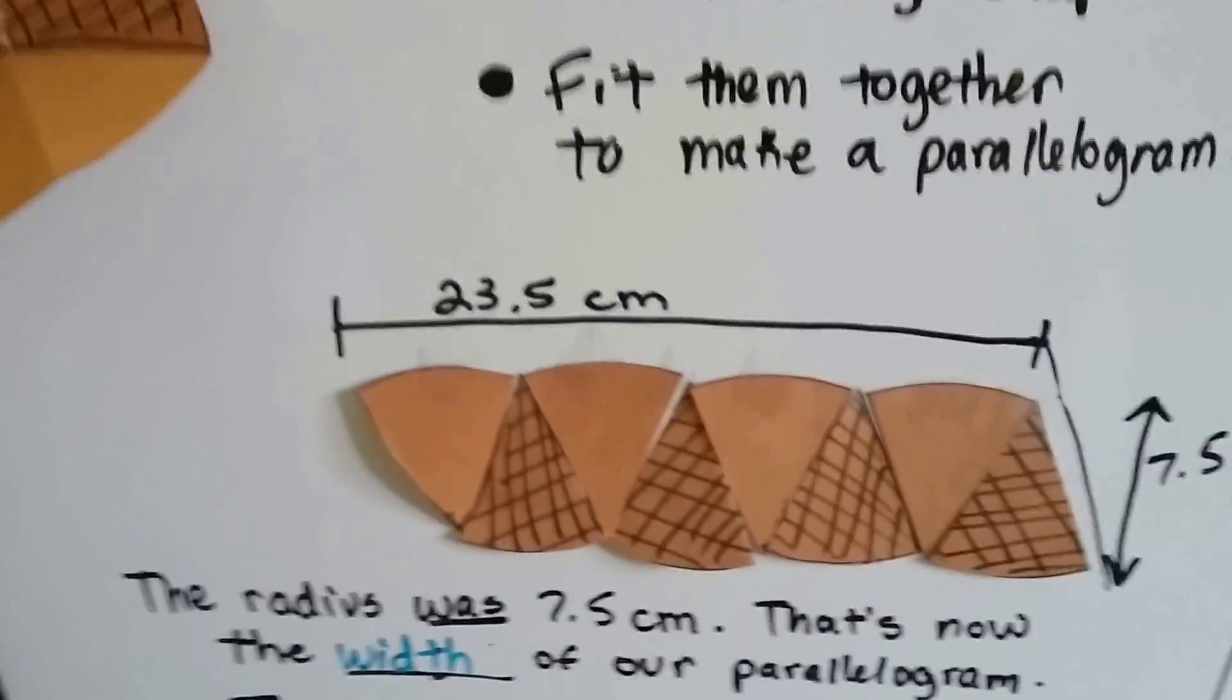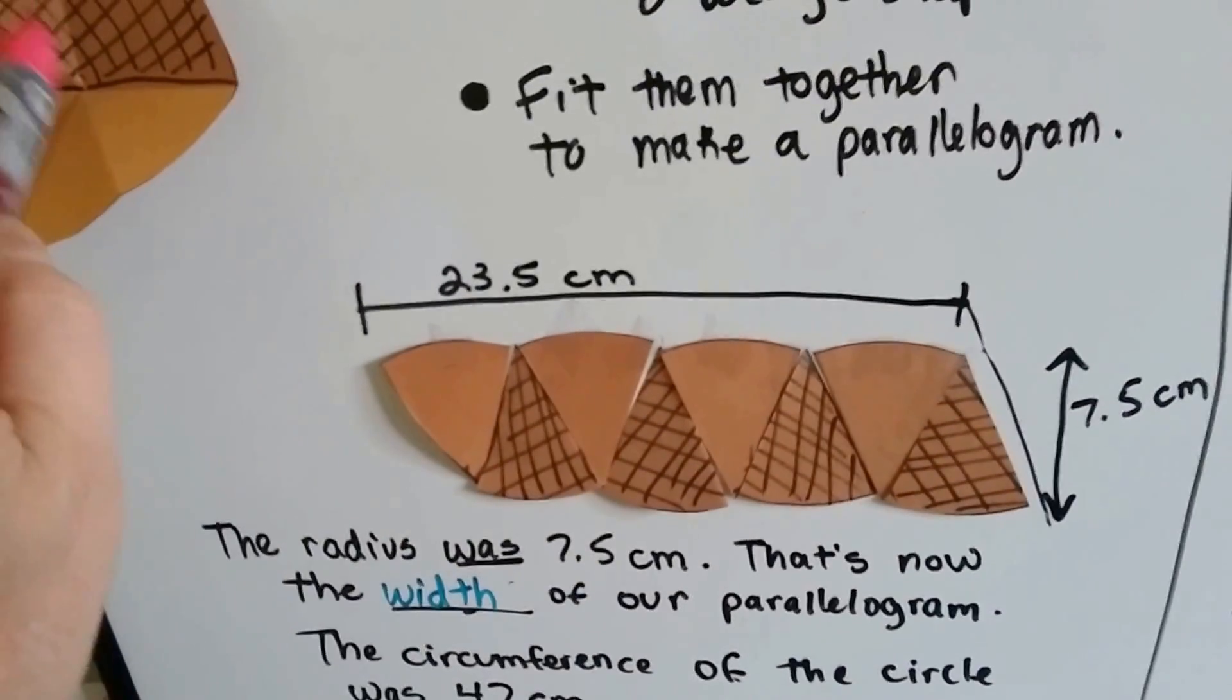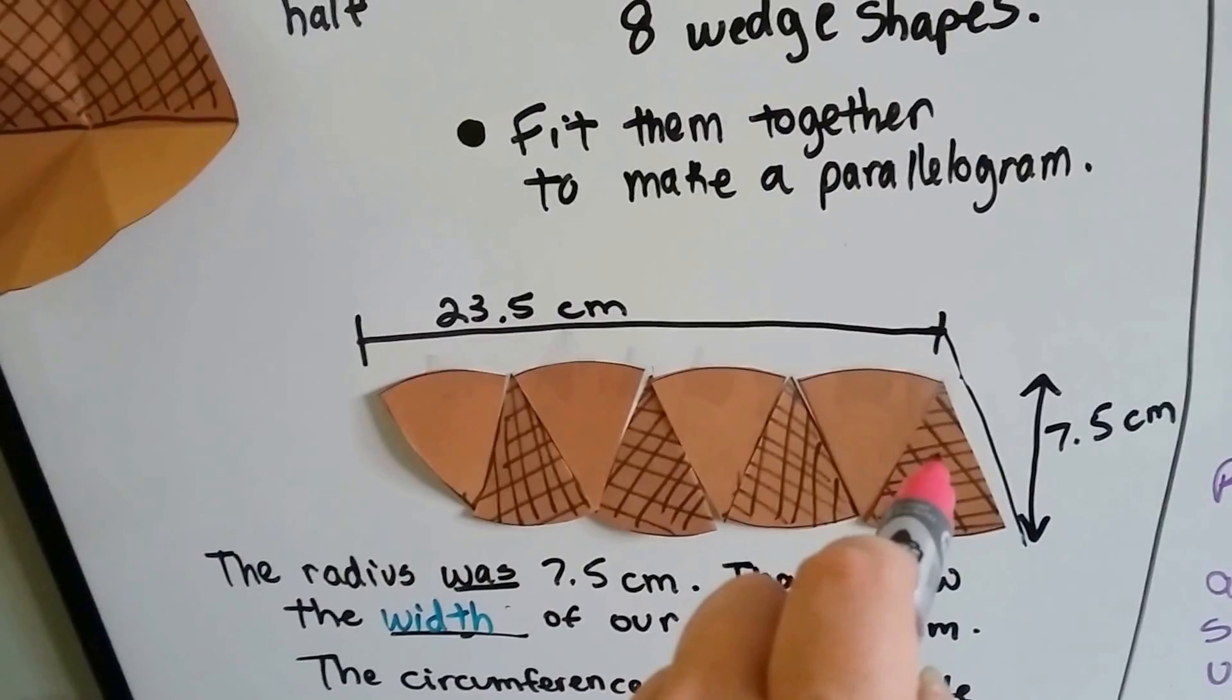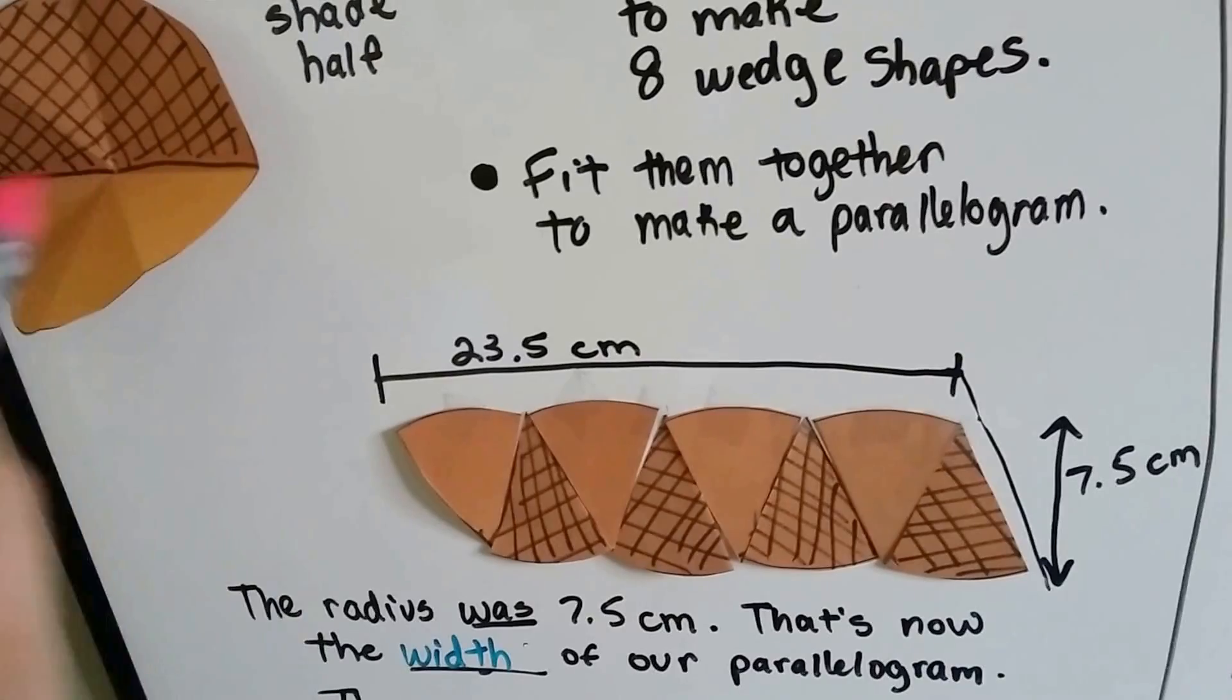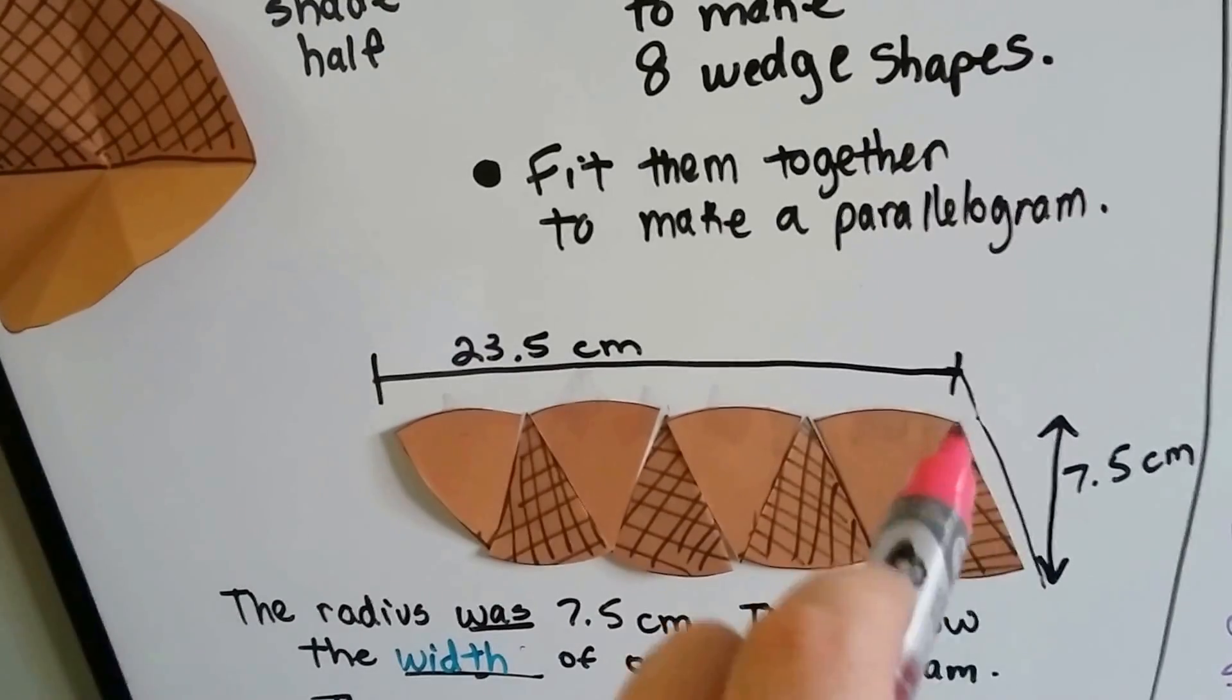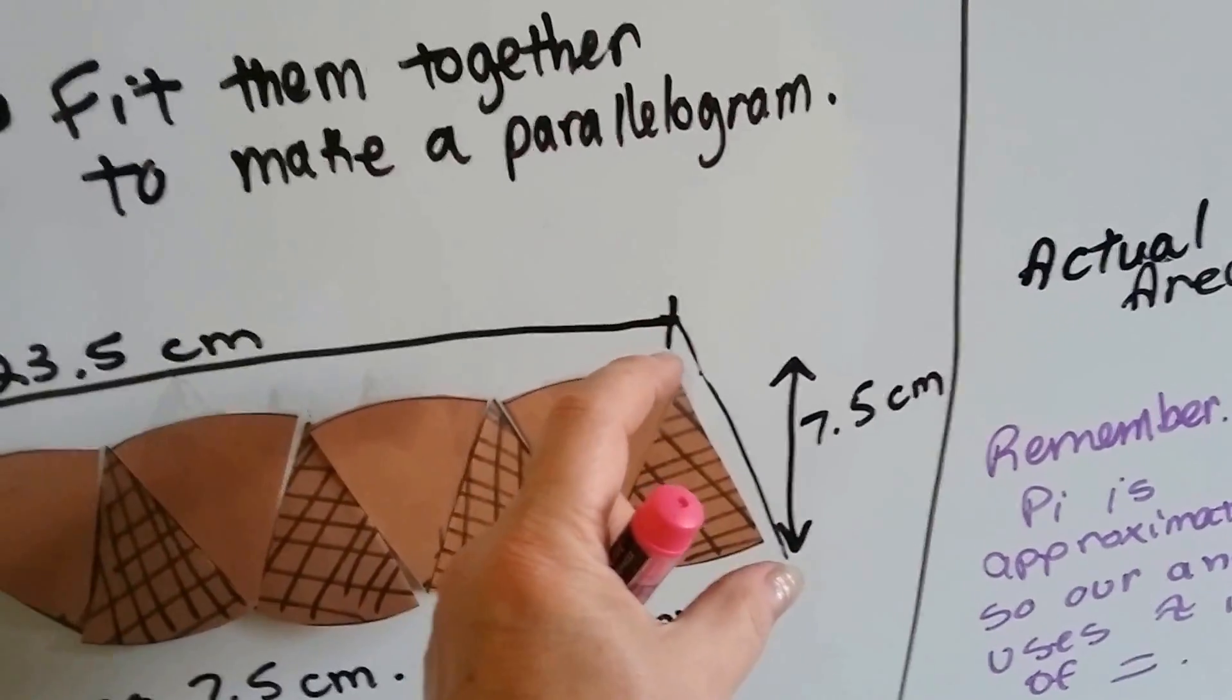Then fit them together up and down, up and down, up and down like this. See? This is what it looked like before it was cut. Fit them together like this. Now I knew my radius was 7.5 centimeters because my diameter was 15 and the radius is half the diameter. So my radius was 7.5 and that's the measure from the outside to the center point. That's this measure right here.